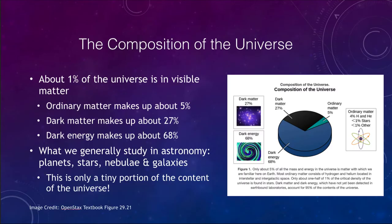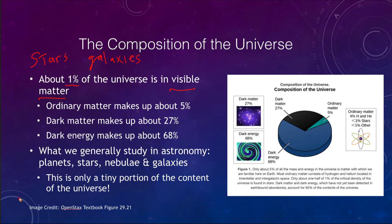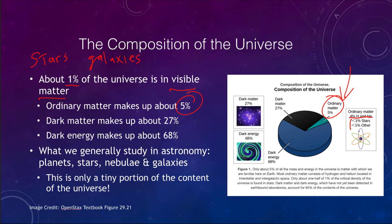What is the composition of the universe? Most of what we study in astronomy is ordinary matter, and about 1% of the universe is visible matter — things we can see like stars, galaxies, and nebulae. Ordinary matter itself is about 5% of the universe, with most of that being hydrogen and helium gas. Less than 1% is in stars or other items. So ordinary matter is just a small part of the mass and energy of the universe.